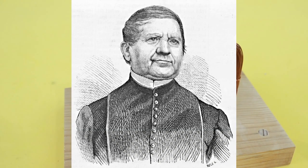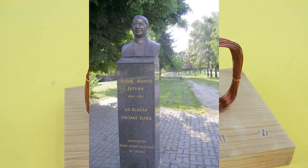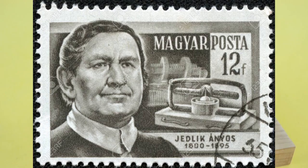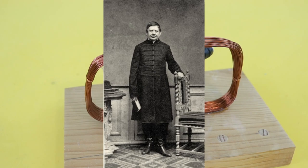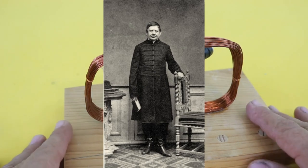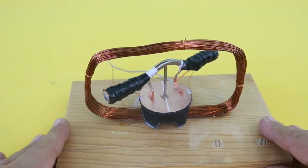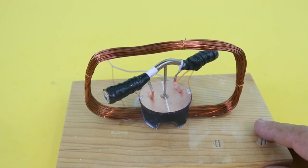He was born in 1800 in Hungary and he was an engineer, physicist and Benedictine priest. He was also a member of the Hungarian Academy of Sciences and the author of several books.